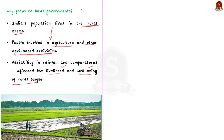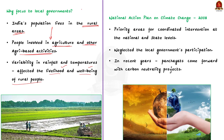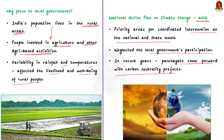India announced its National Action Plan on Climate Change in 2008, identifying priority areas for coordinated intervention at national and state levels. But the action plan neglected the local governments' participation. The author of this article feels that if Panchayati Raj institutions had been given a greater role, we would have seen better results. In recent years, many Gram Panchayats on their own effort have come forward with carbon neutrality projects.